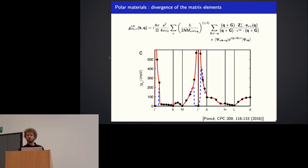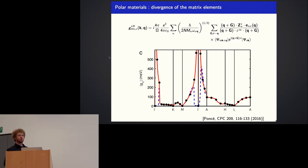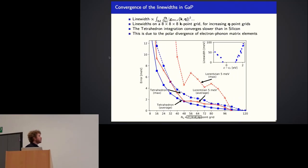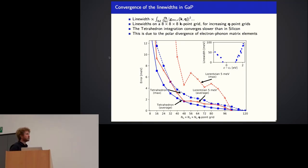In polar semiconductors, the matrix elements diverge close to the gamma point. This divergence is problematic because it means we need many Q points to capture it correctly. In gallium phosphide, a polar material, the error decreases slower than in silicon — where 50×50×50 was enough. The tetrahedron method still converges faster than the Lorentzian technique because the delta functions are better described, but the diverging matrix elements are not helped by the tetrahedron. The double grid technique helps for the energies but not for the matrix element divergence.